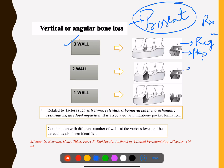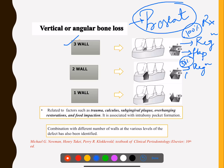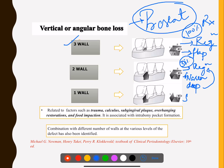In a two-wall defect, two walls of the room are missing. Regeneration can still be considered, but not in all cases — only in narrow and deep defects would you go for regeneration. Shallow and wide defects will go for resective surgery. Three-wall defects have better regenerative potential compared to two-wall defects.